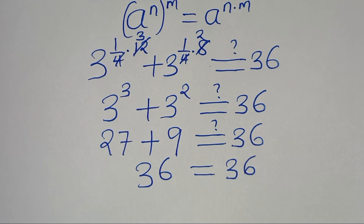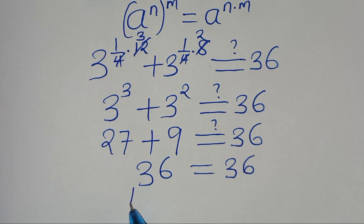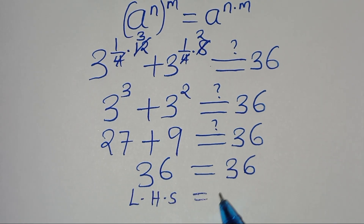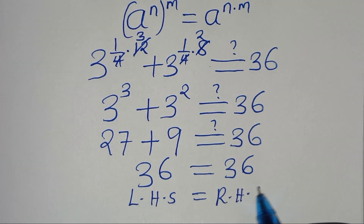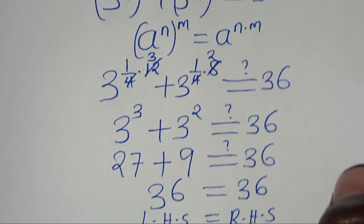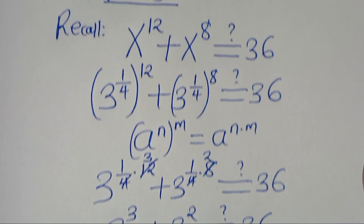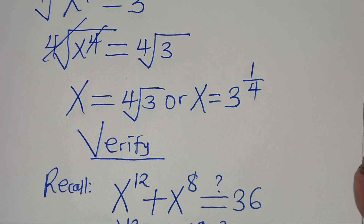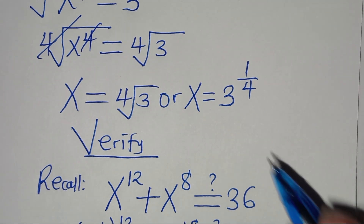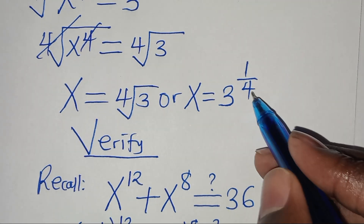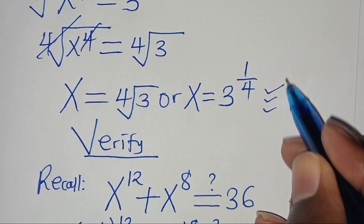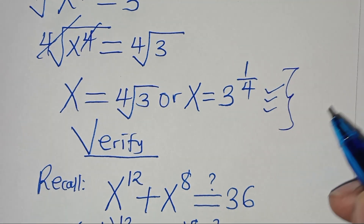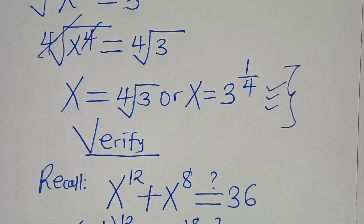This implies that the left-hand side is equal to the right-hand side, and this confirms that the value of x, which is equal to 3 to the power of 1 over 4, actually satisfies the equation.